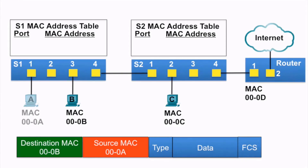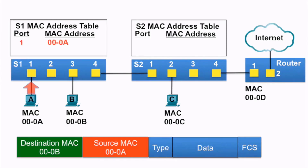PCA has an ethernet frame to send to PCB. The source MAC address of the frame is 000A and the destination MAC address is 000B. The ethernet frame is sent to switch S1. S1 receives the ethernet frame, examines the source MAC address, and notices that this MAC address is not in its MAC address table, so it adds the MAC address and the incoming port number. Next, S1 examines the destination MAC address and notices that it is not in its table, so it floods it out all ports.